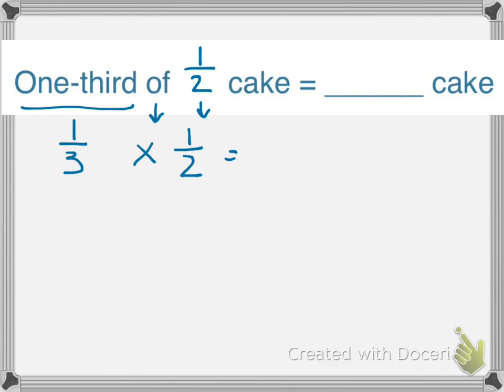Again, we're going to multiply one third times one half. In our previous lesson, we learned to multiply across. One times one is one, and three times two is six. So yes, one third of a half is one sixth.